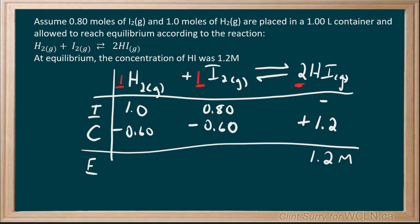This lets us complete the rest of our table to get 0.40 molar of hydrogen at equilibrium and 0.20 molar of iodine at equilibrium.